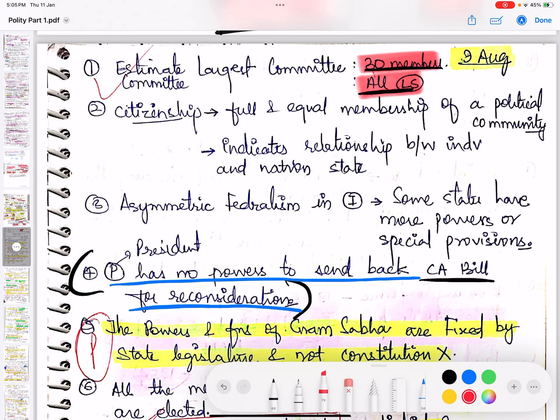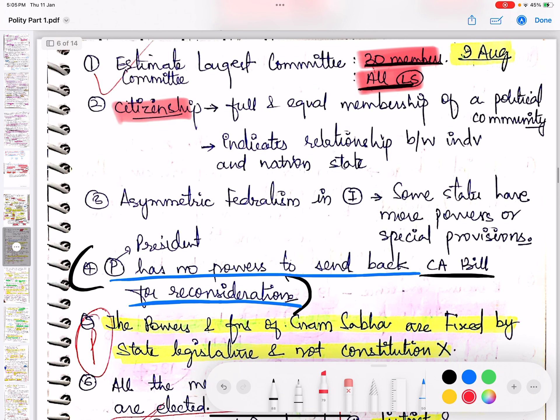What is citizenship? It is the full and equal membership of a political community. It indicates the relationship between the individual and the nation state.